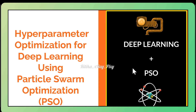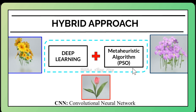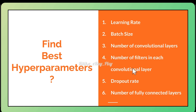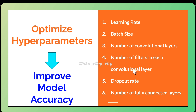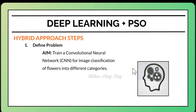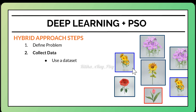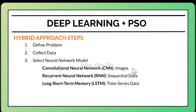Now we will focus on the example: hyper parameter optimization for deep learning using particle swarm optimization. Our aim is to train a CNN for image classification to identify different types of flowers from images. The goal is to find the hyper parameters that maximize model accuracy. Clearly define the problem, collect and pre-process data, then select an appropriate model.